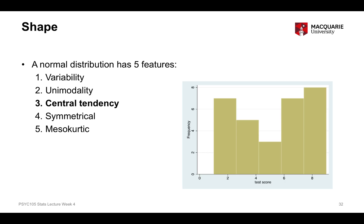The third feature is central tendency — there has to be some kind of peak or rise of scores towards the middle of the distribution, with tails falling on either side. A distribution that lacks central tendency has no clear peak in the middle, just a variety of scores going up and down without a clear rise and fall. The remaining two features we've already covered are symmetry and kurtosis — a normal distribution must be approximately symmetrical and mesokurtic.